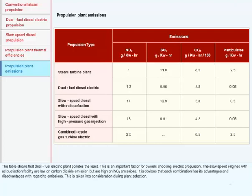Propulsion Plant Emissions: The table shows that dual fuel electric plant pollutes the least. This is an important factor for owners choosing electric propulsion. The slow speed engines with reliquefaction facility are low on carbon dioxide emission but are high on NOx emissions. It is obvious that each combination has its advantages and disadvantages with regard to emissions.